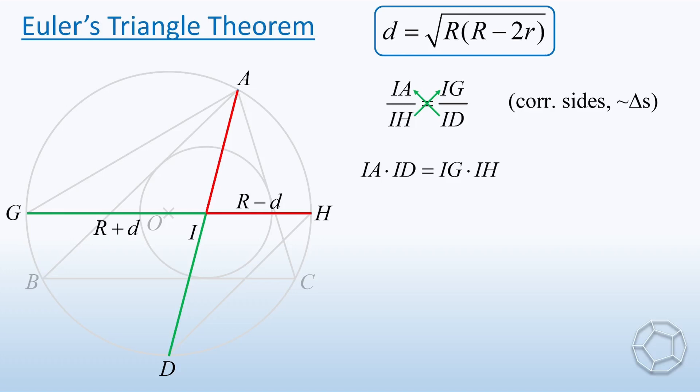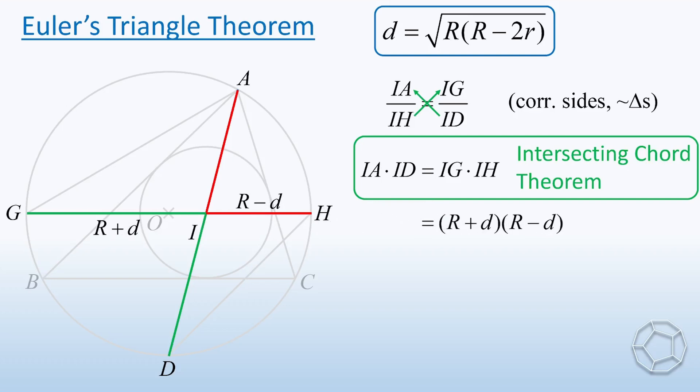Actually, this result is also called the intersecting chord theorem. We put the lengths of IG and IH inside. Expand the right hand side, we get R² minus d². Let's call this equation one. Next, we move on to step two. That is proving an isosceles triangle.